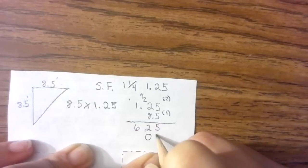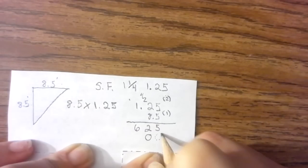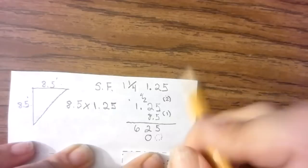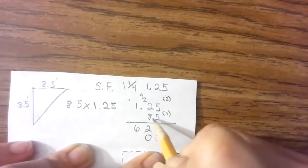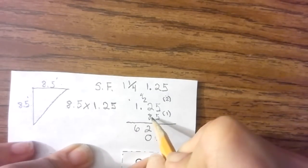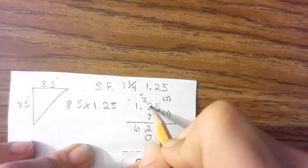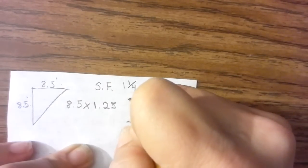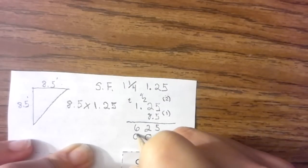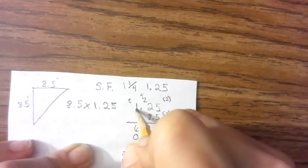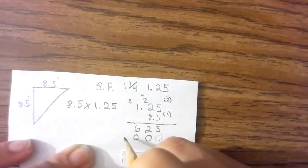I have my placeholder here because I'm working from the ones place since I have a decimal there. 8 times 2 is 16 plus 4 is 20. 8 times 1 is 8 plus 2 is 10.